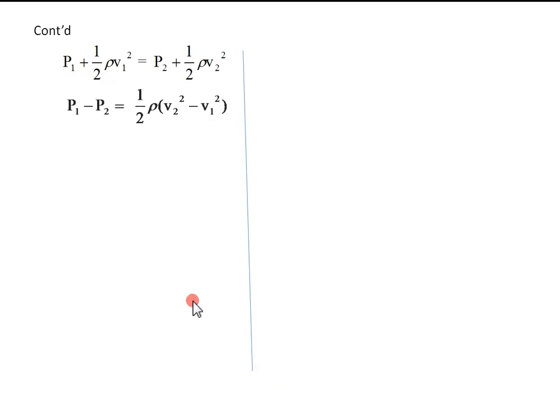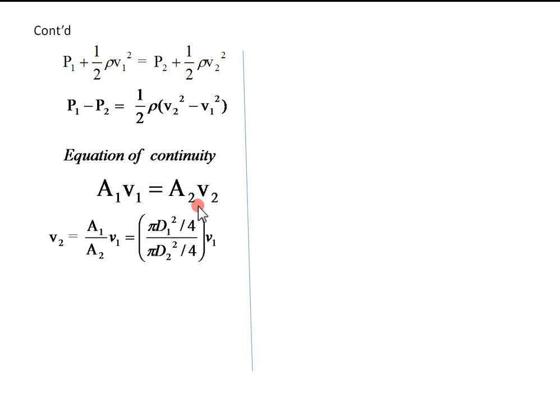Rearranging, P1 minus P2 equals half rho V2 squared minus V1 squared. From equation of continuity, A1v1 equals A2v2, from which V2 is A1 over A2 times V1. Substituting the given expressions, we get V2 equals 4 times V1.